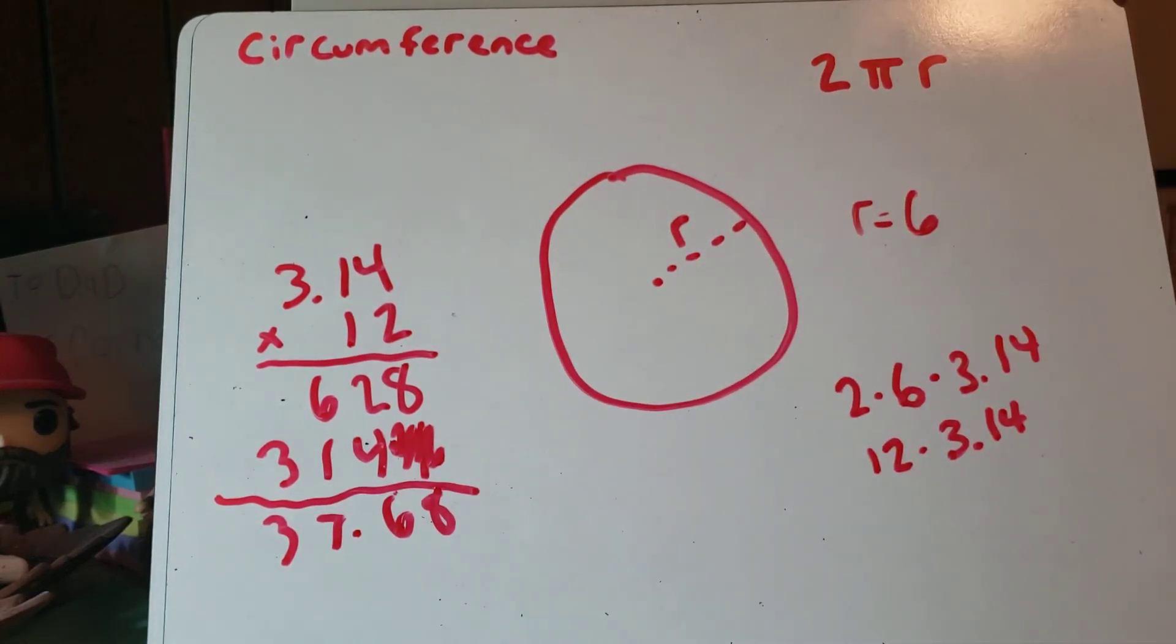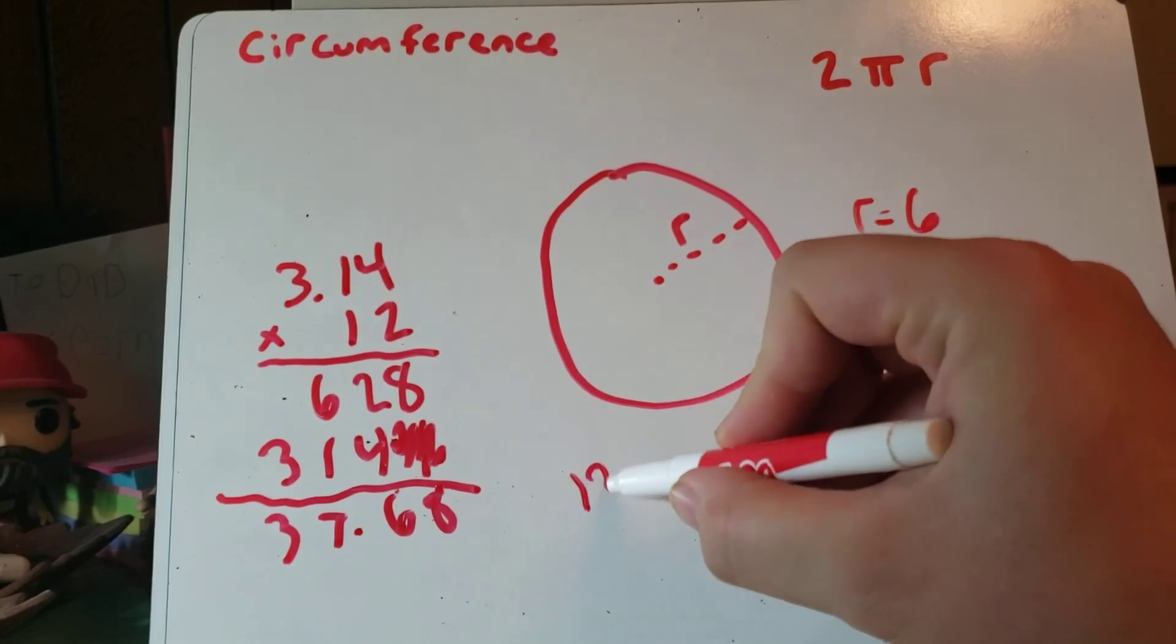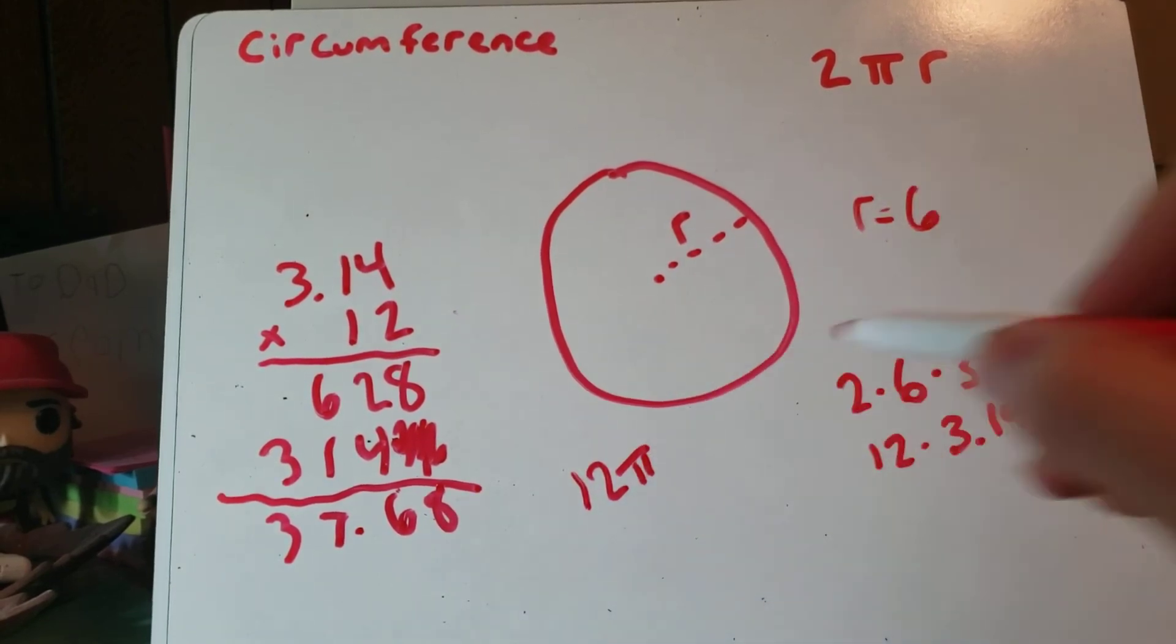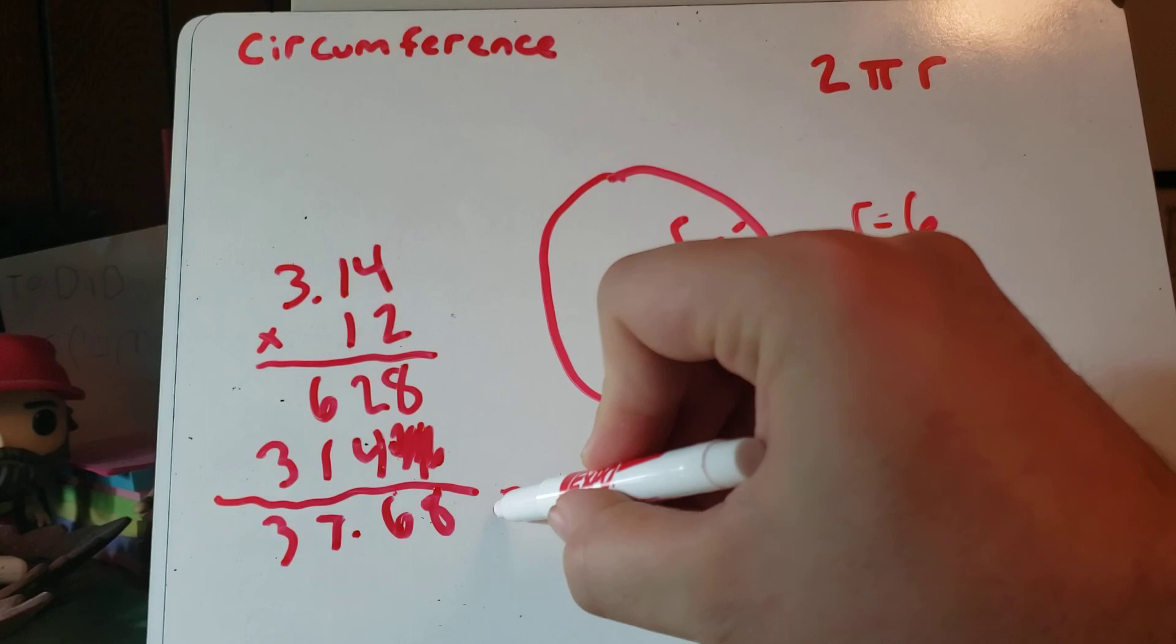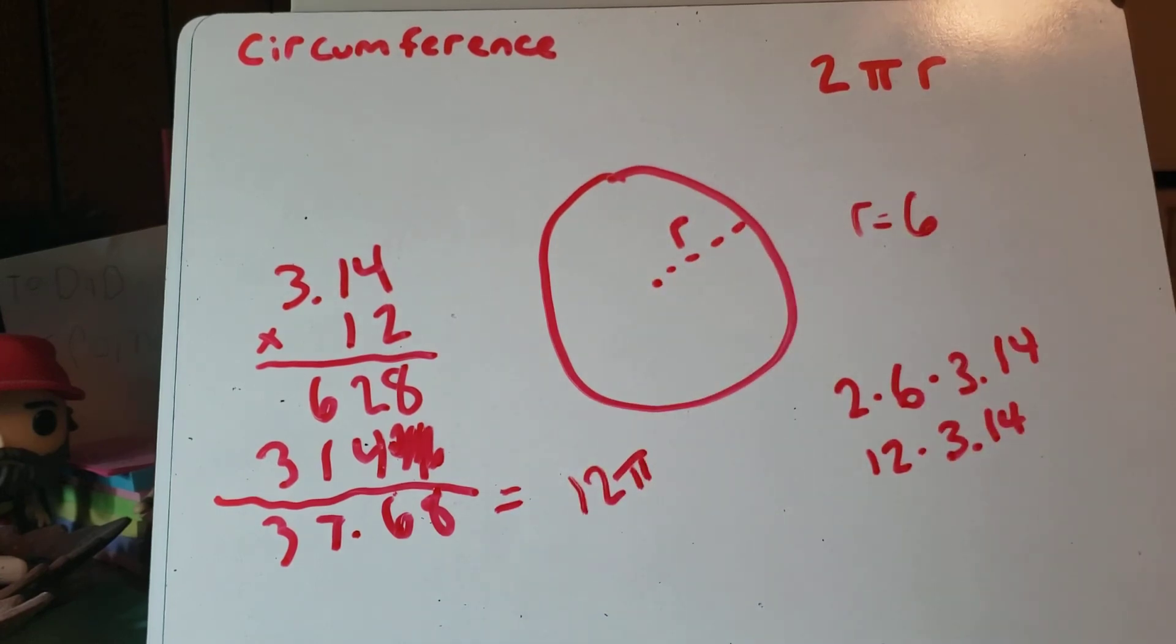Now sometimes your teacher might say, instead of actually multiplying by pi, they'll just have you write the answer like this. 2 times 6 is 12, and then they'll just have you leave pi there. Okay? These are the same thing. 12 pi and 37.68. So it's okay if your teacher asks you to do either.